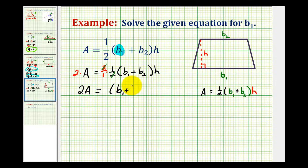And on the right side now, we have the quantity B sub one plus B sub two times H. Now this H is attached to this quantity by multiplication. So we can isolate the quantity B sub one plus B sub two by dividing both sides by H.